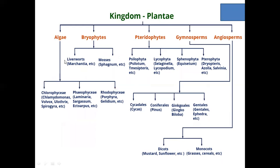Algae has three classes: Chlorophyceae, Phaeophyceae, and Rhodophyceae. In Rhodophyceae, Gelidiun is called Chinagrass.